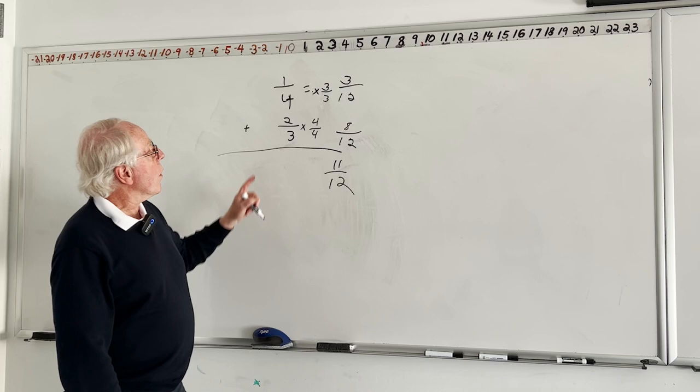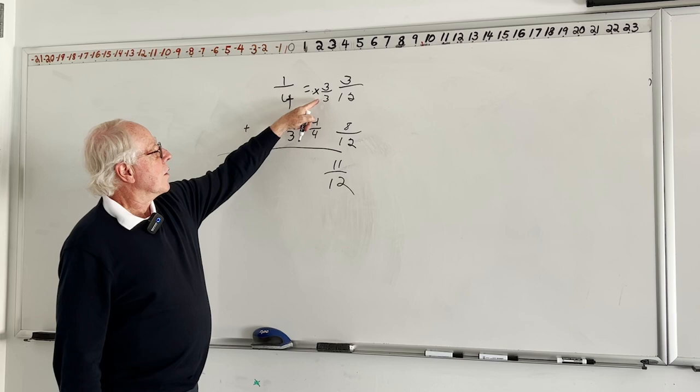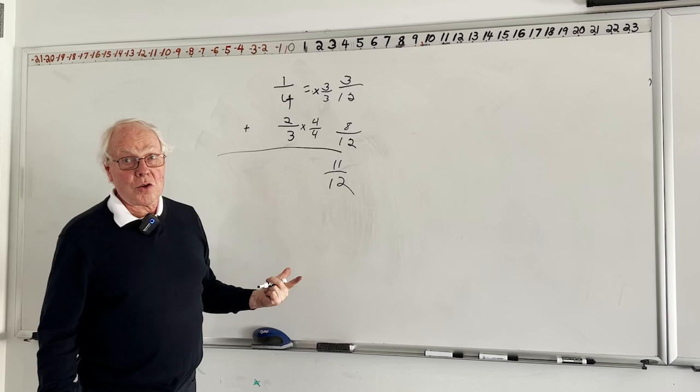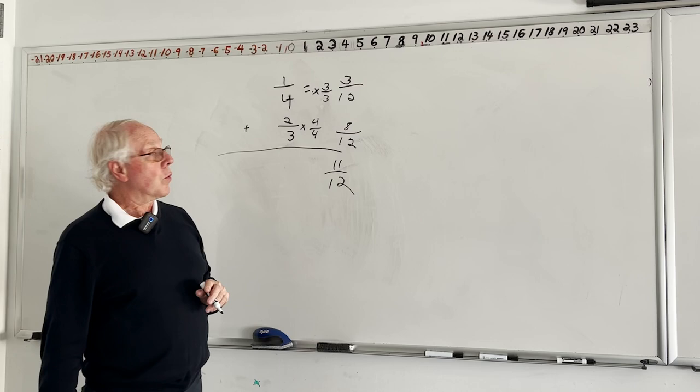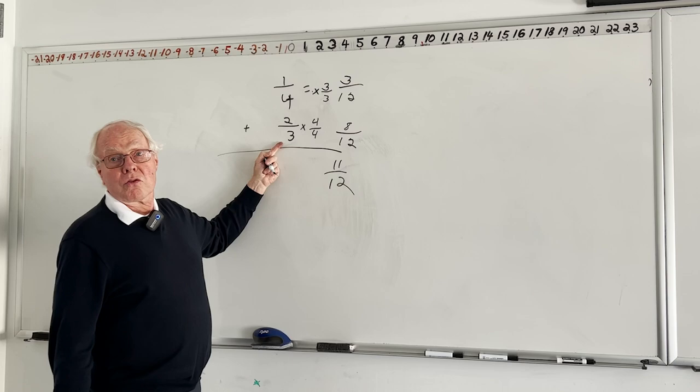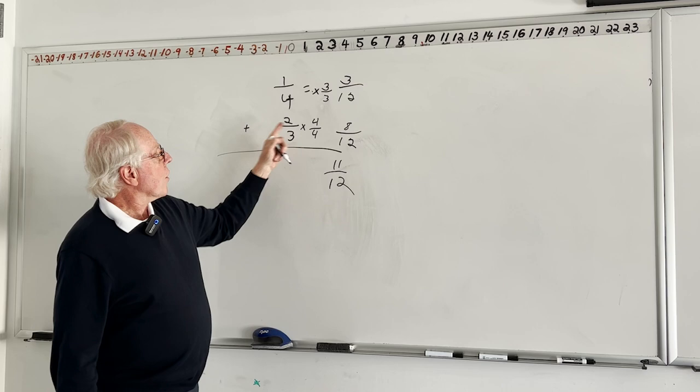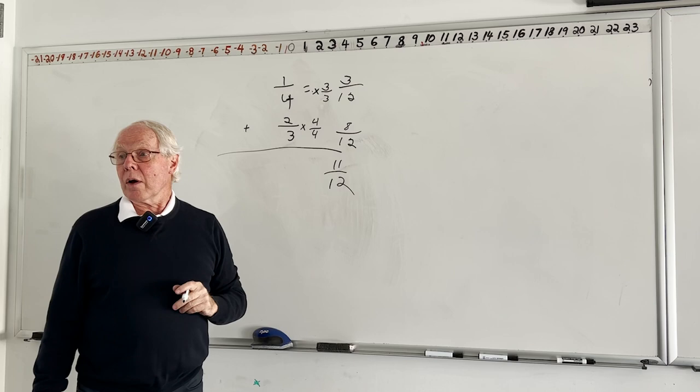What gives us the right to do this? If you think about it, three over three is a fraction — three divided by three is one. So we're multiplying one-fourth by one; it doesn't change the value, just the name to an equivalent value with a different name. Same over here: four over four is one. We're just multiplying the fraction by one. These two fractions equal each other, and these two equal each other, and now we can add them — eleven-twelfths.